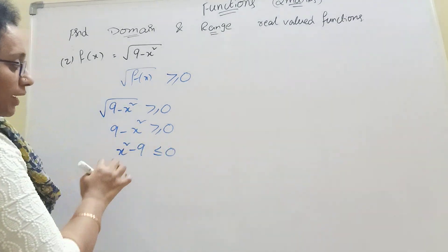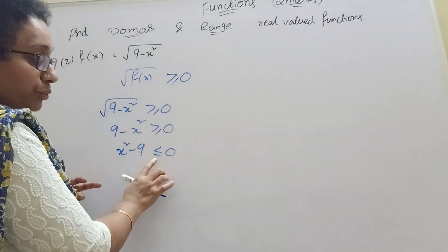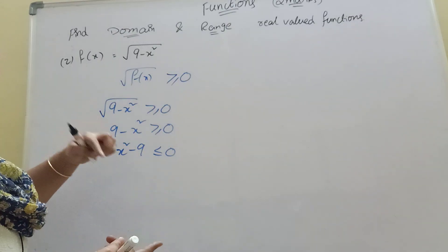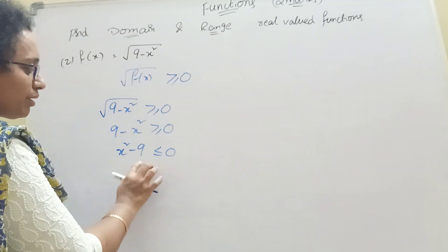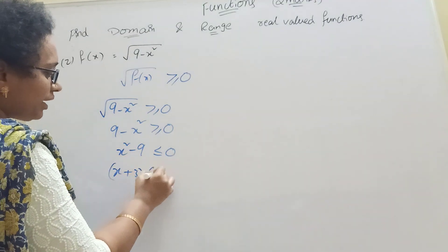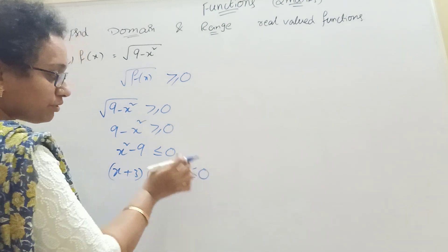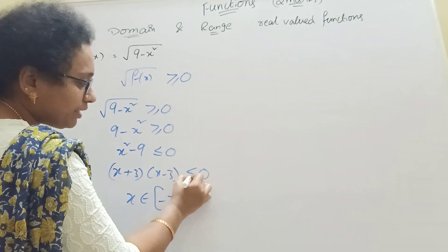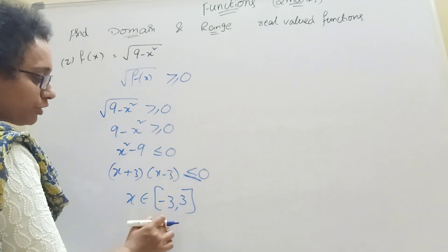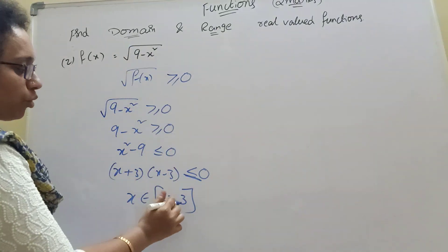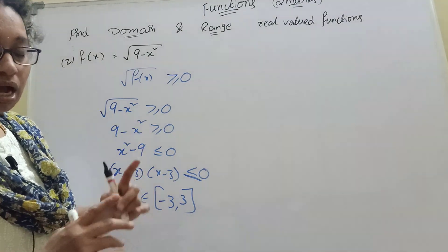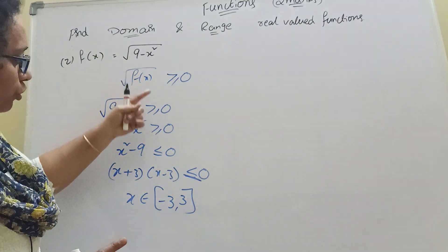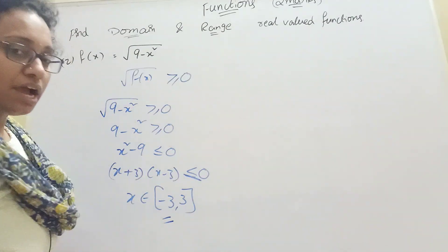x square minus 9 less than or equal to 0. x squared minus 9 less than or equal to 0, that is x minus 3 times x plus 3 less than or equal to 0. So x belongs to minus 3, 3 closed bracket — and open bracket here depends on whether we have less than or equal to; since we have closed bracket. This is domain.